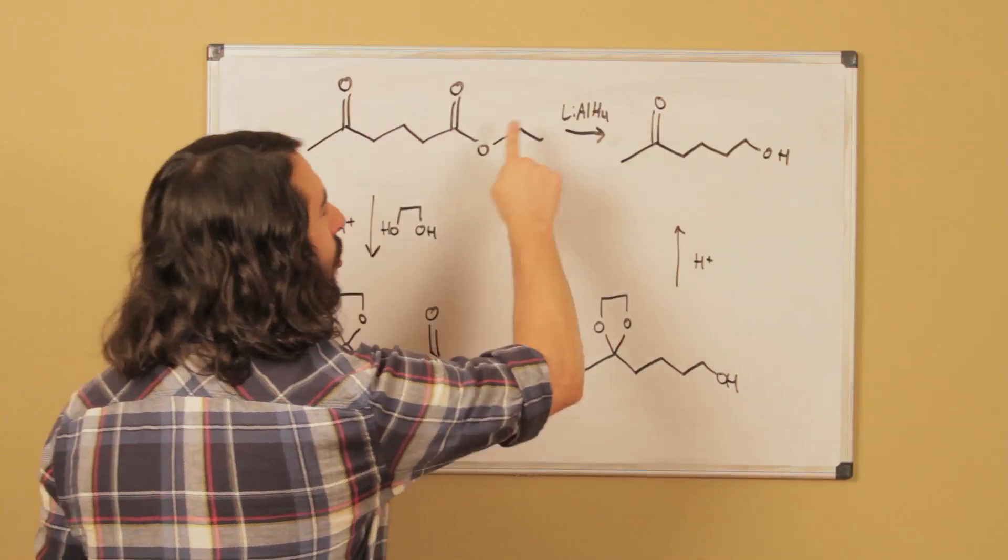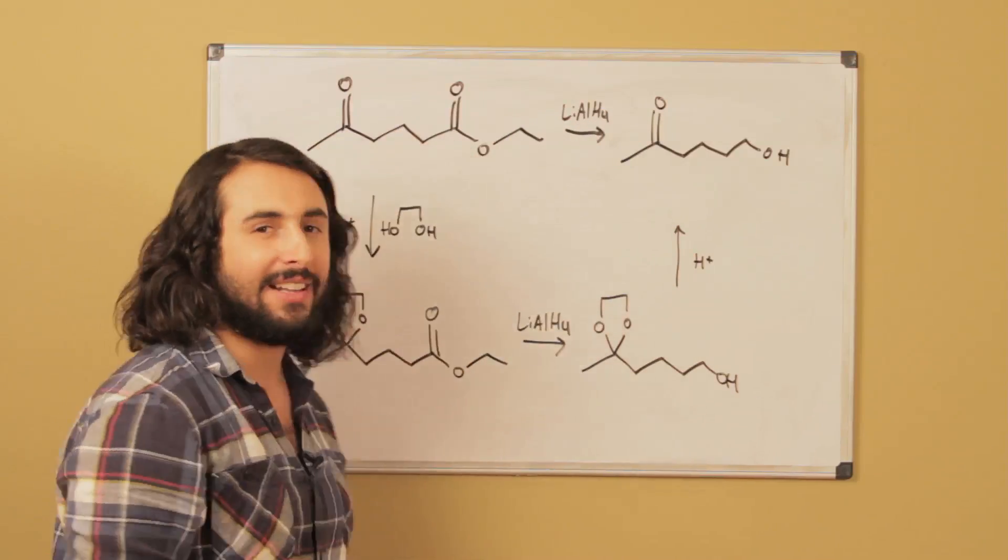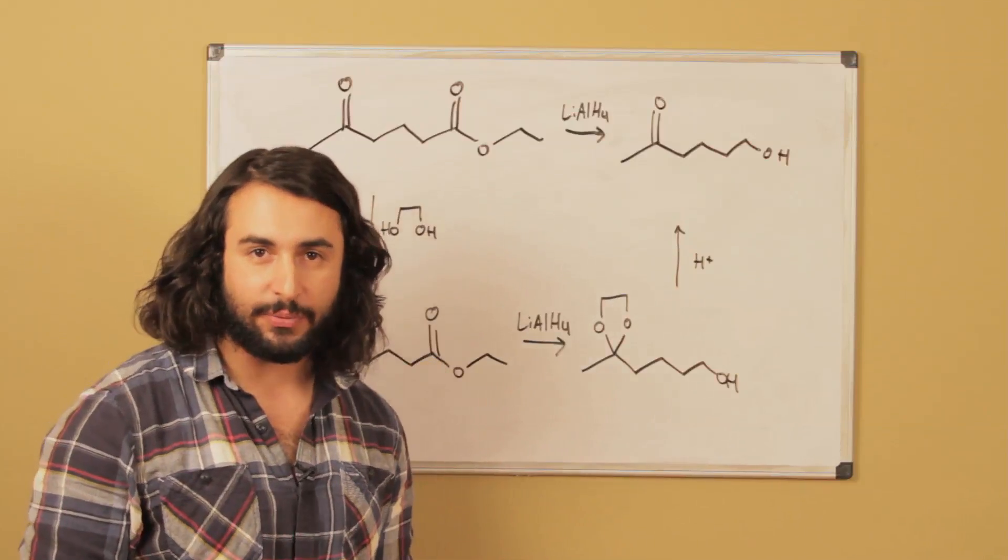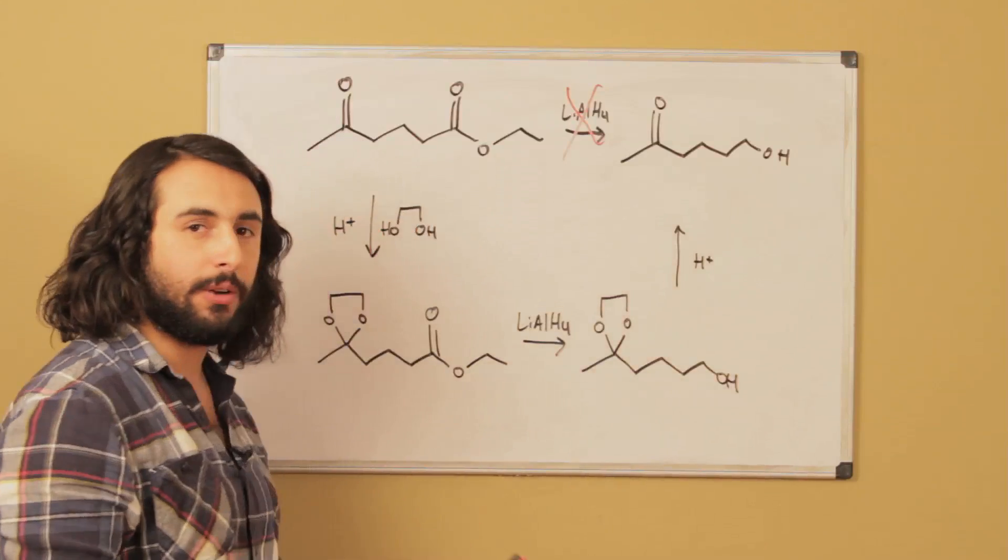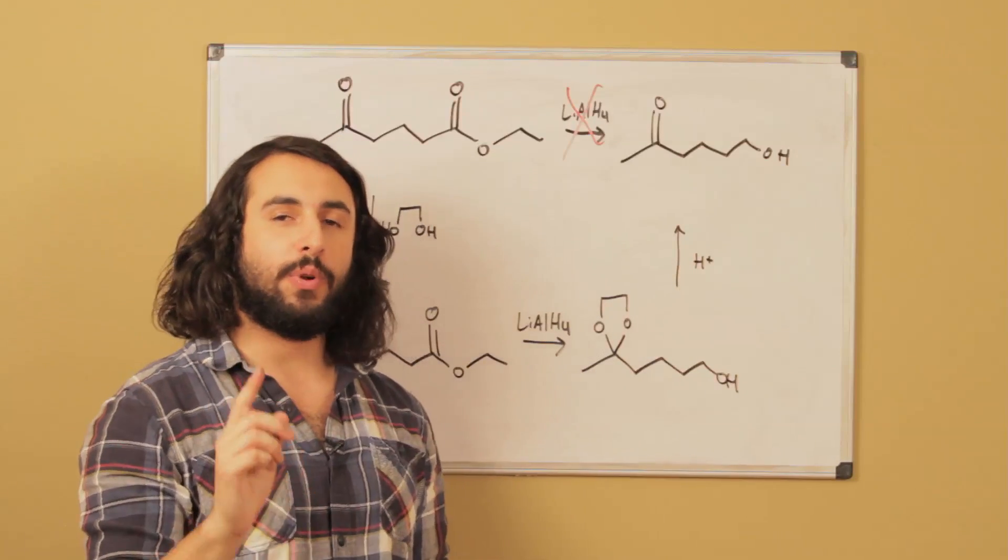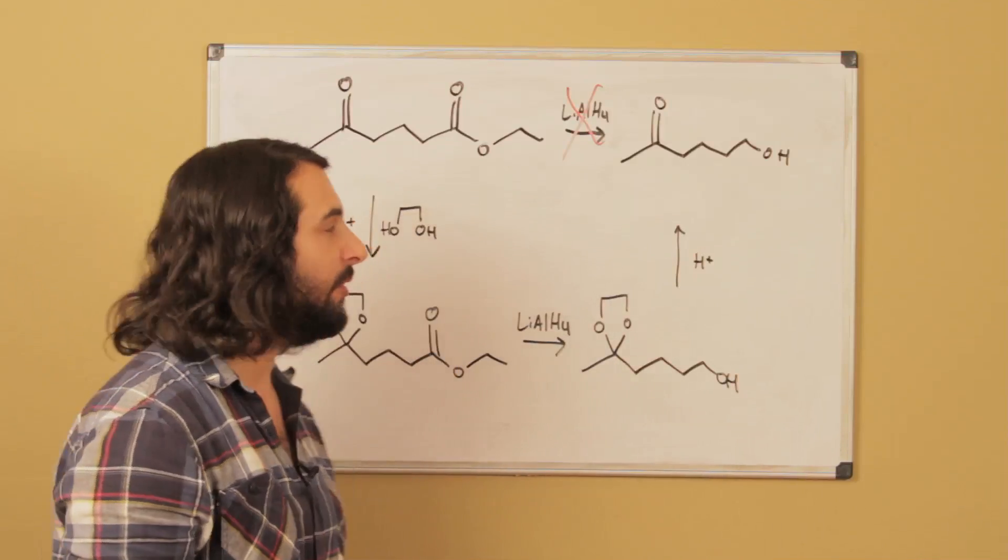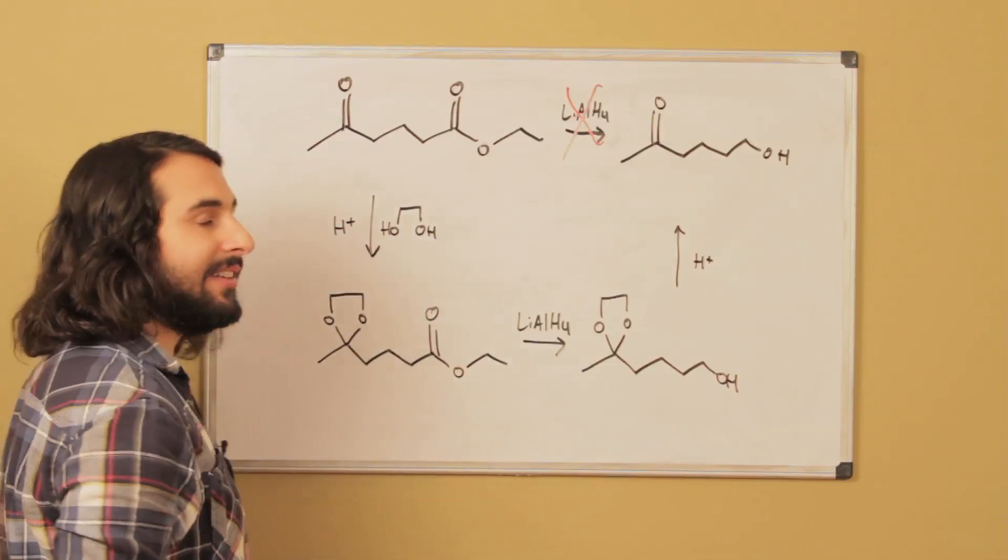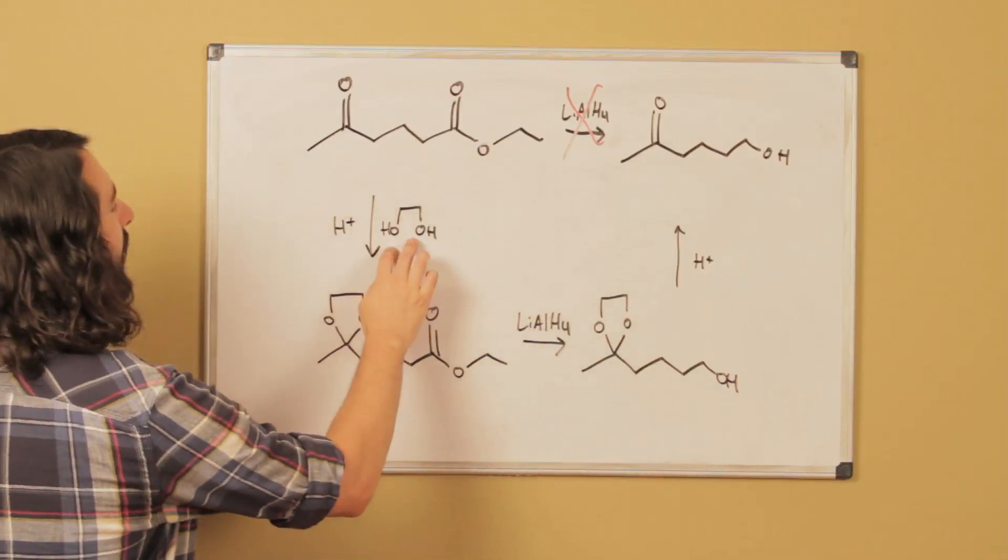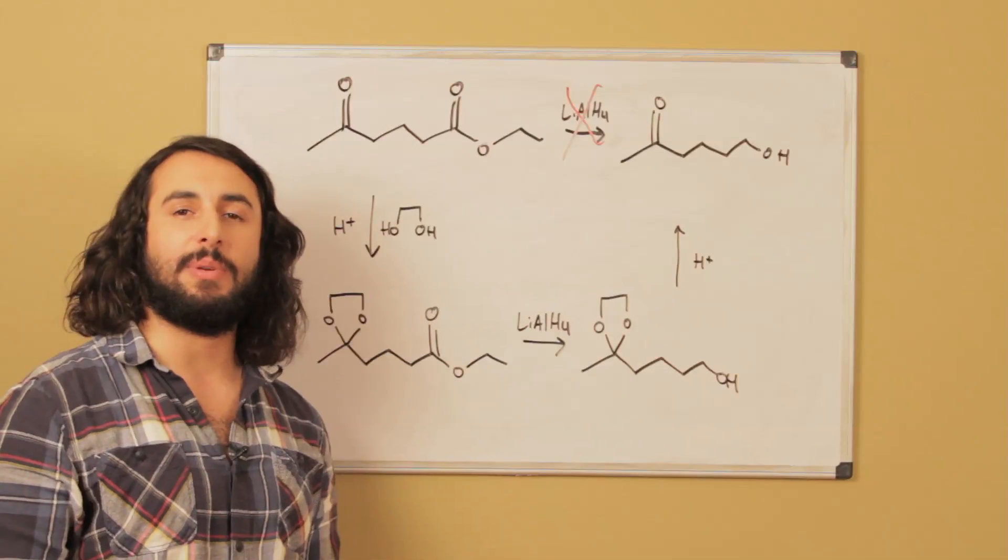Here's the problem - we've got a ketone right there. There's no way we're going to get lithium aluminum hydride to selectively reduce the ester and not the ketone. It's going to reduce whatever it sees first, so this reaction won't work. What if we protect that carbonyl, specifically the ketone? We can react in acidic conditions with this 1,2-ethanediol, a vicinal diol.